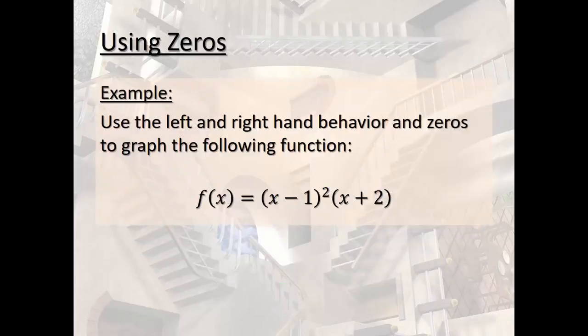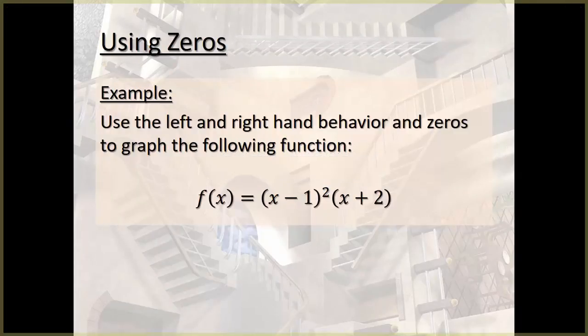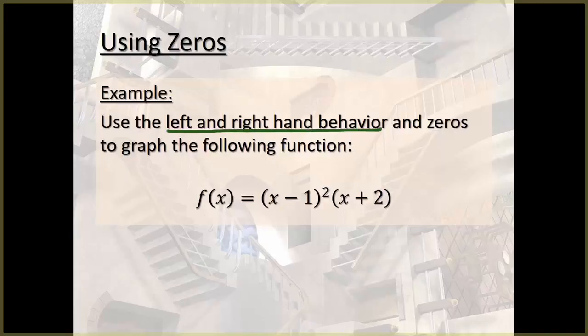All right. So let's kind of piece this together a little bit. We're going to combine last section and this section. We're going to use the left and right-hand behavior and the zeros to make the following graph.